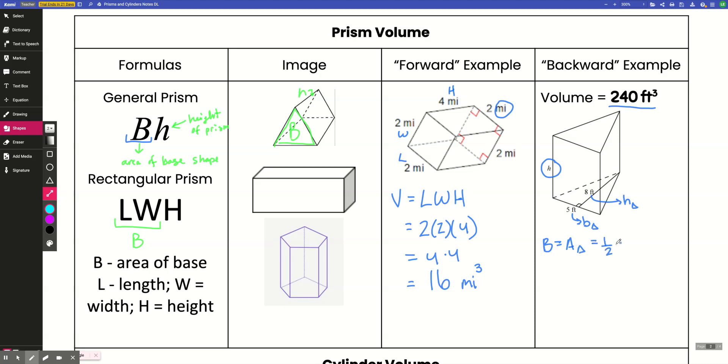So I need to use that to find capital B, the area of my base shape. So capital B here is the area of that triangle at the bottom. Remember, area of a triangle is 1 half times the base of the triangle, which is 5, times the height of the triangle, which is 8. So this becomes 1 half of 40. 5 times 8 is 40, and half of 40 is 20. So that's the area of my base.